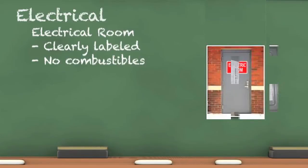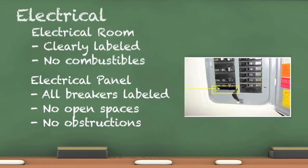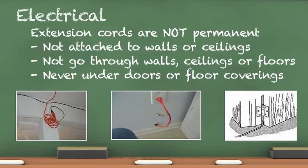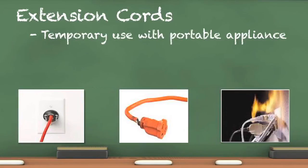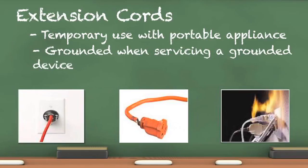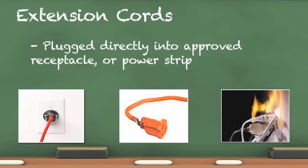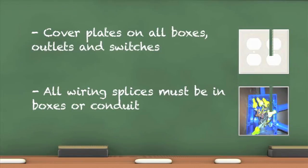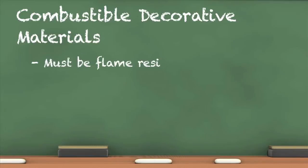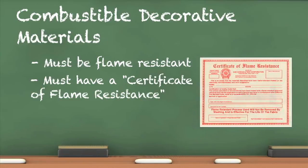Electrical rooms and panels must be free of combustibles. All breakers must be labeled either by labeling each switch or completing the panel schedule. All open spaces are required to have approved blanks or covers. Extension cords may not be affixed to or go through walls and ceilings, shall not be placed under flooring of any kind, and are for temporary use with portable appliances only. When the portable device being powered is grounded, the extension cord should be grounded as well. Extension cords must be plugged directly into a wall outlet or power strip with surge protection and may power only one portable device at a time. Cover plates must be in good condition and completely cover the outlet, switch, or box. Combustible decorative materials are required to be inherently flame resistant or treated to be flame resistant.